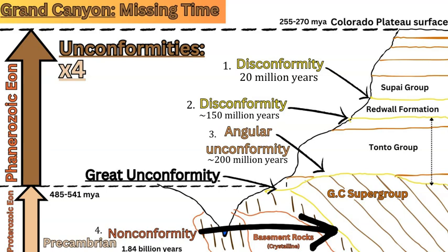There is also a nonconformity between the basement crystalline rocks — the igneous-metamorphic suite — and the Grand Canyon Supergroup above it. You have the igneous metamorphic rocks below and the tilted sedimentary rocks of the Supergroup above. This nonconformity represents around 500 million years of missing time, because the basement rocks are around 1.7 billion years old and the oldest Supergroup rocks are around 1.2 billion years old, giving a 500 million year gap.